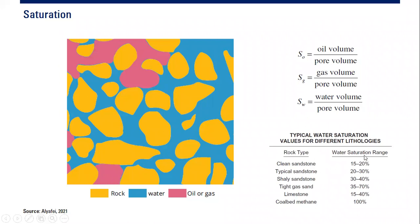For clean sandstone, you can have water saturation ranging from 15 to 20 percent. Typical sandstone, if you are not so sure, you can put your saturation at 20 to 30 percent. Shaly sandstone can be 30 to 40 percent. Tight gas sand can be 35 to 70 percent - very high water saturation, but because this is gas, gas still can flow in this high saturation environment.